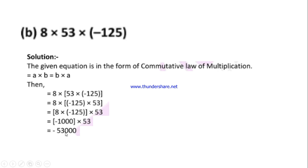8 × (-125) = -1000, then -1000 × 53 = -53,000. This will soon be finished. Without applying this law, without applying this property, to simplify it takes much time.